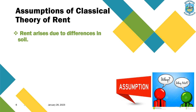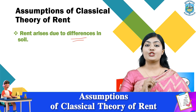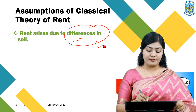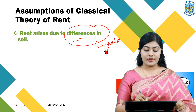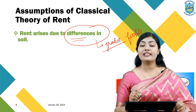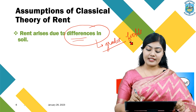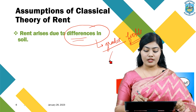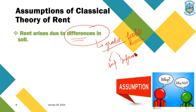The next assumption is that rent arises due to differences in soil. According to Mr. David Ricardo, there are different grades of soil: some are fertile in nature and some are not as fertile. Because of these various levels of fertility, rent is charged. Mr. Ricardo emphasized the distinction between superior land — land with a lot of fertility — and inferior land, which has less fertility. He categorized land into these different kinds: superior and inferior.